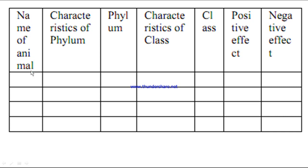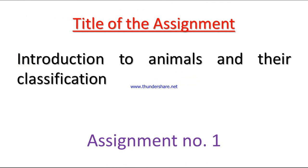The chart includes: name of animals, characteristics of phylum, phylum, characteristics of class, class, positive effect, and negative effect. This is the chart in which we have to prepare the assignment. The title of the assignment is: Introduction to Animals and Their Classifications.